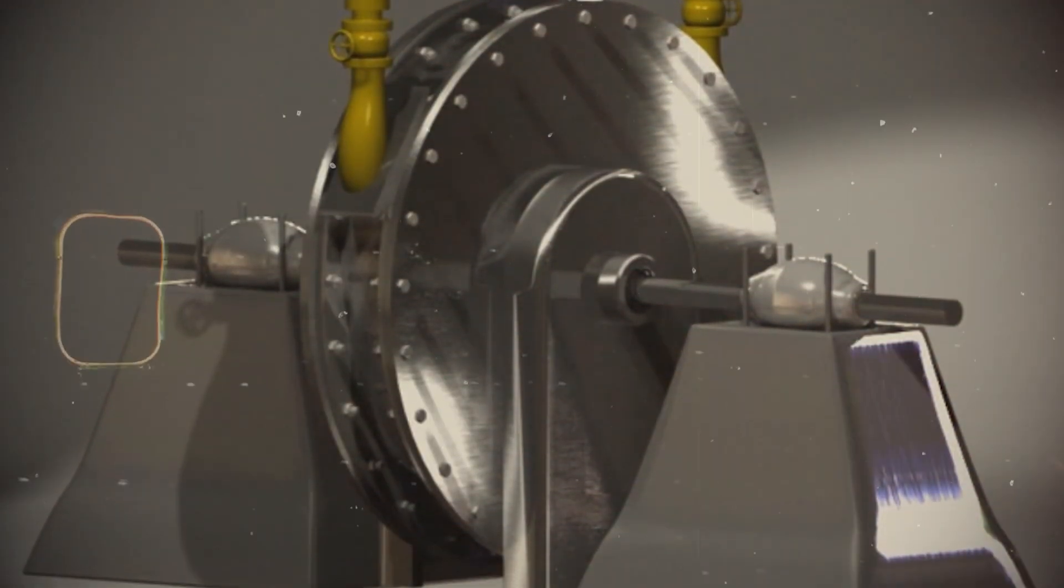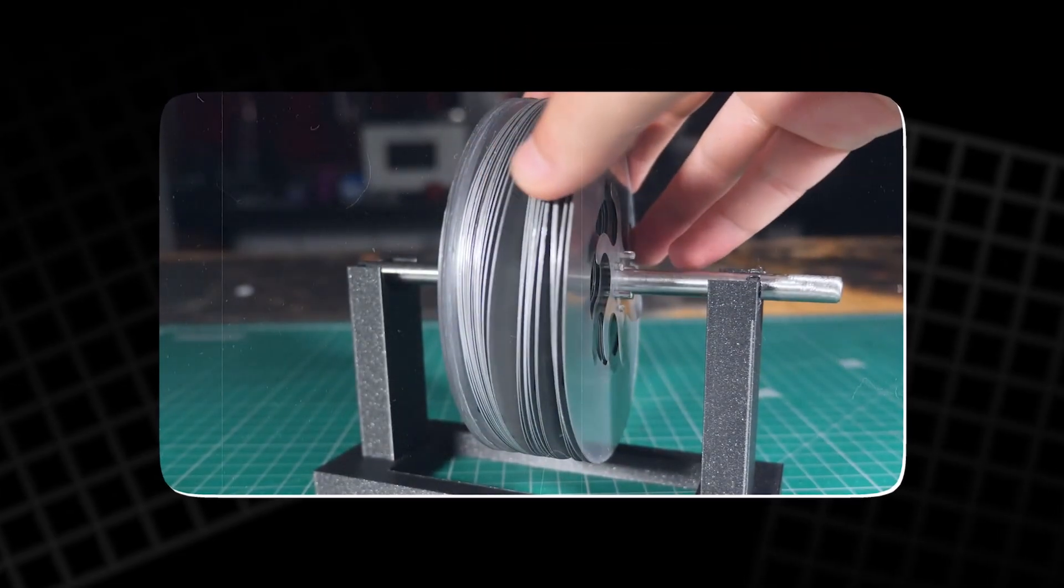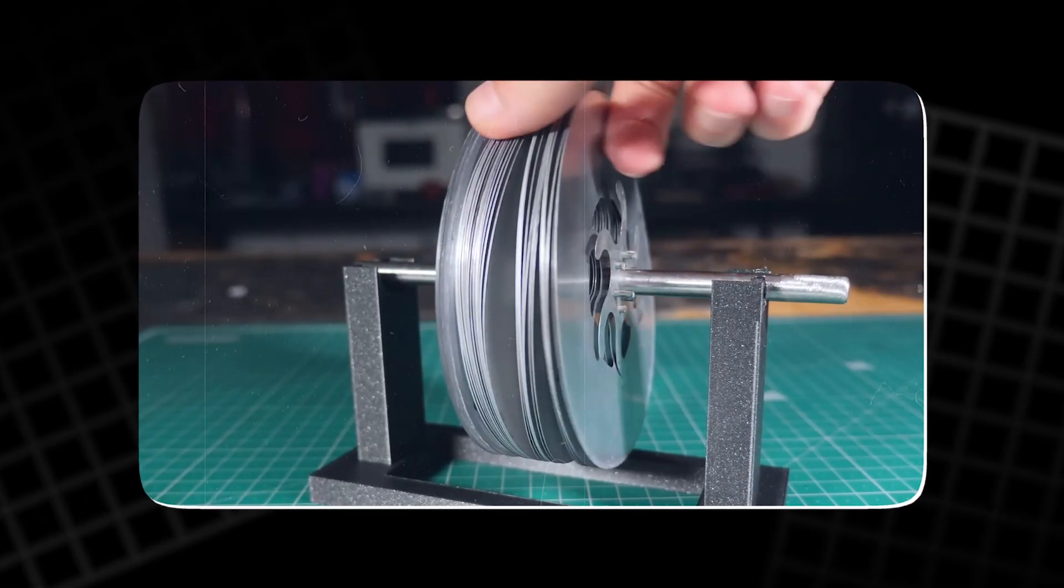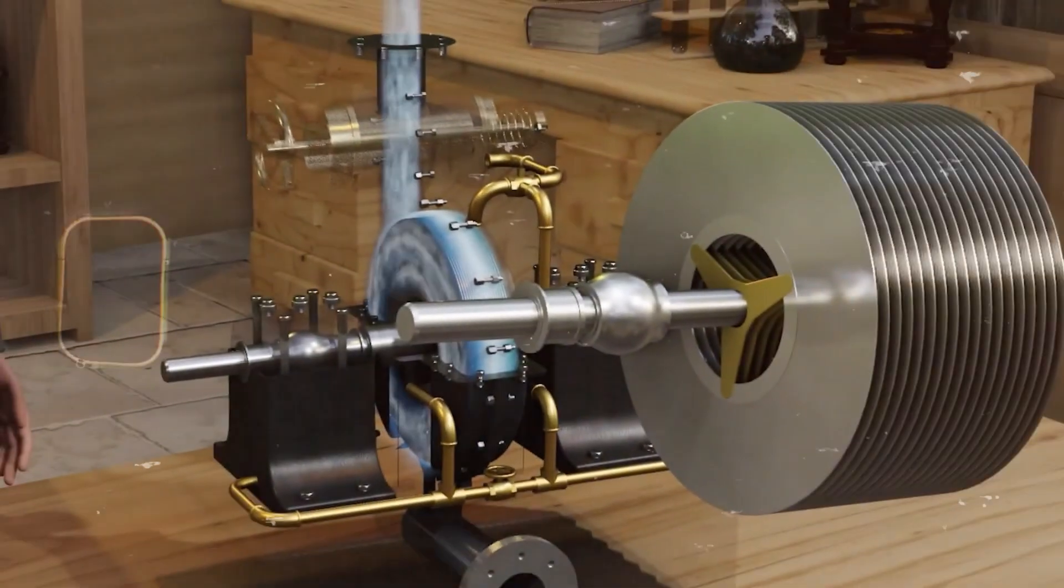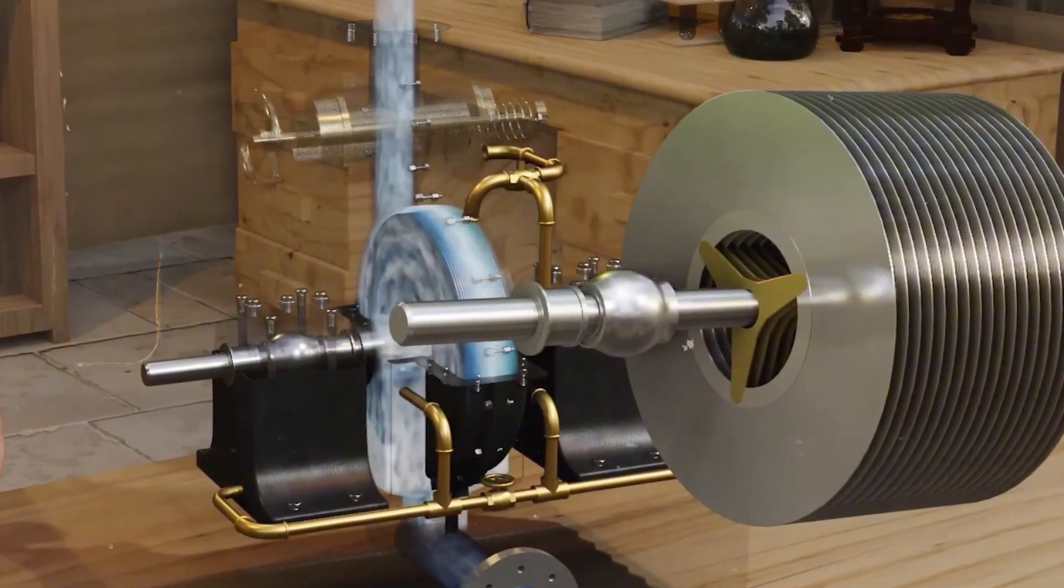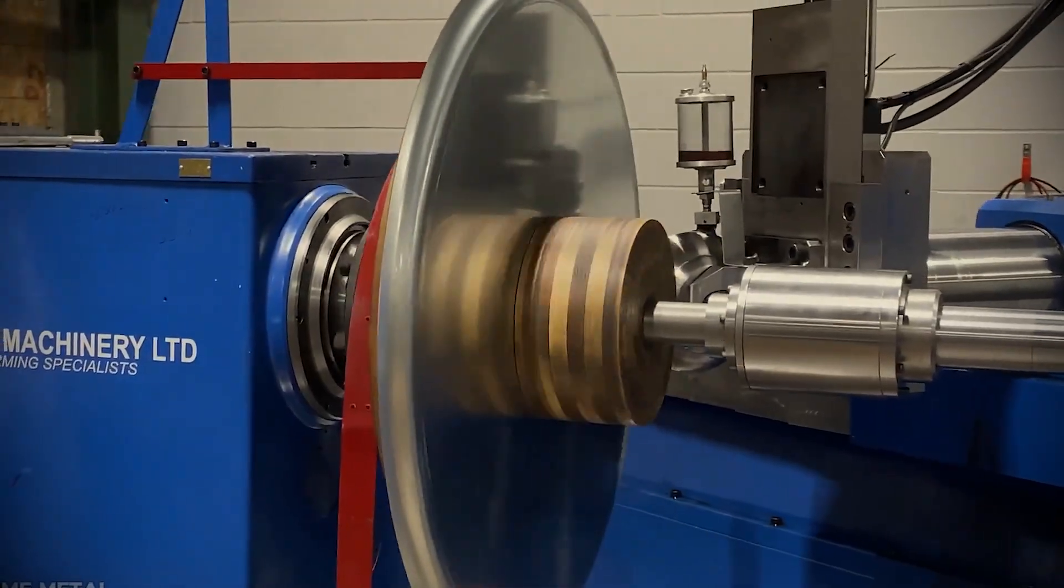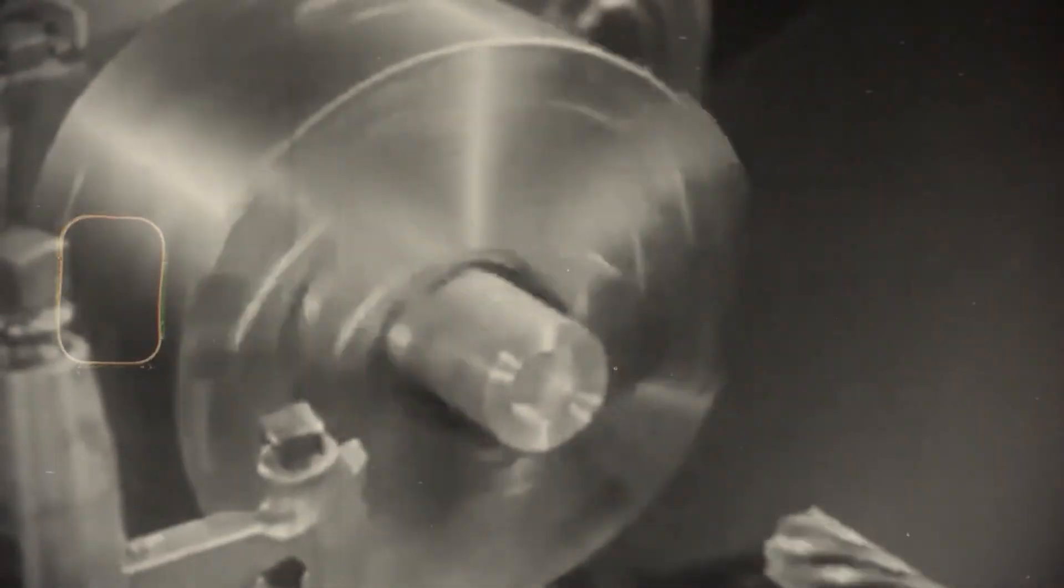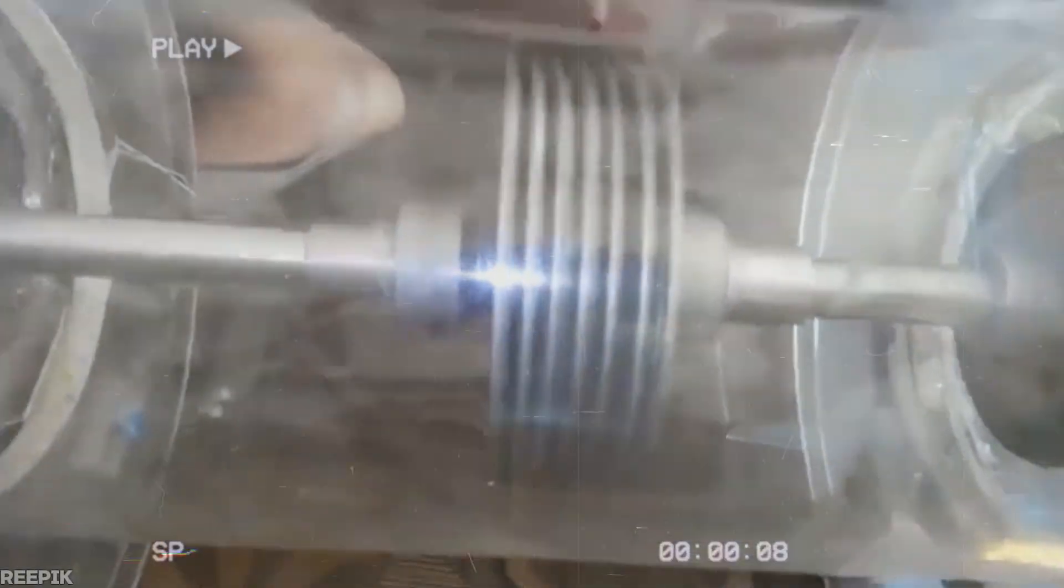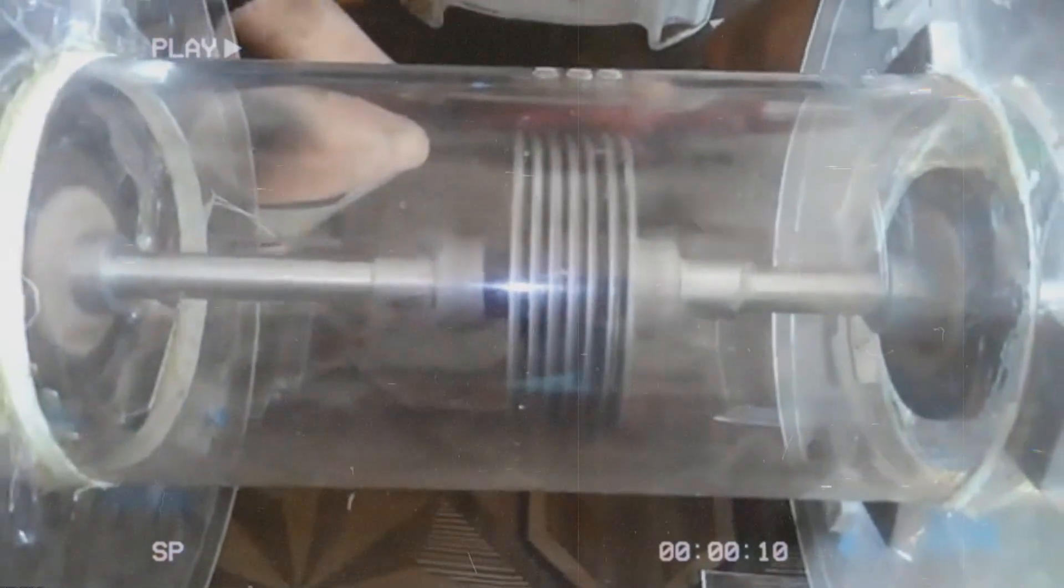So, how do Tesla turbines use that effect? Instead of having blades, it relies on many thin discs packed closely together. High speed steam or air enters the turbine tangentially, swirling around between the discs. As the fluid spirals inward towards the center, the sticky boundary layer drags the discs along, causing them to spin. The smoother the flow, the less turbulence there is, and the more efficiently the turbine converts that flow into rotational energy.